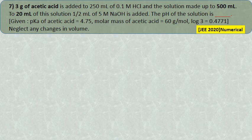JEE 2020 question: 3 grams of acetic acid added to 250 mL of 0.1 molar HCl, solution made up to 500 mL. To 20 mL of this mixture, 0.5 mL of 5 molar NaOH is added. The pH must be calculated. pKa of acetic acid and molar mass are given. Neglect any changes in volume after neutralization.